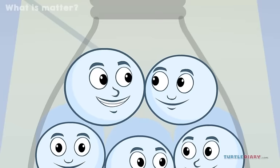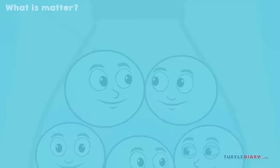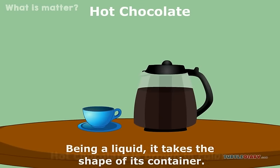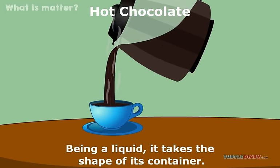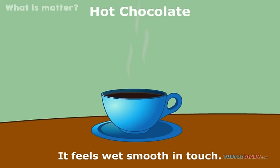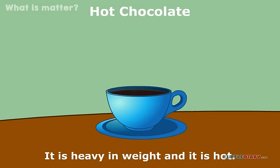Let's look at the properties of a liquid now. Hot chocolate. Hot chocolate is brown in color. Being a liquid, it takes the shape of its container. It feels wet, smooth in touch. It is sweet in taste. It is heavy in weight, and it is hot.